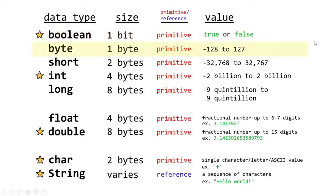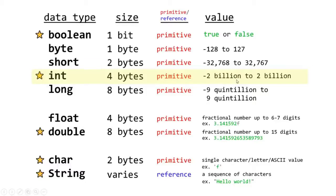Next we have byte — with one byte we can hold an integer number between negative 128 to 127. A short has two bytes of memory so it can hold a larger number between roughly negative 32,000 and 32,000. Integers are important — these use four bytes of memory and they can store a number up to just under 2 billion to just over 2 billion.